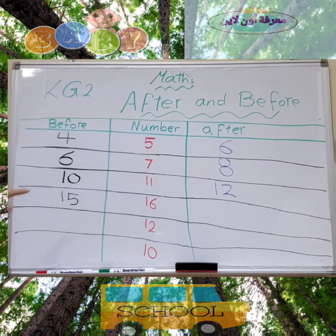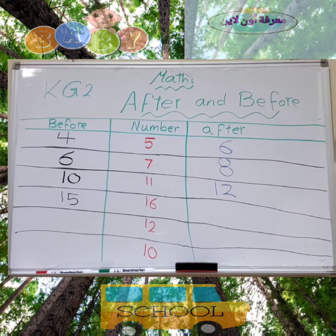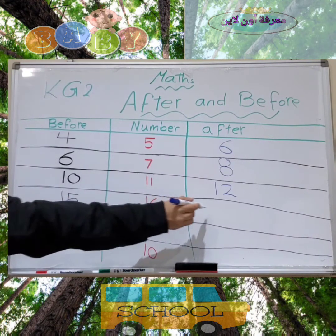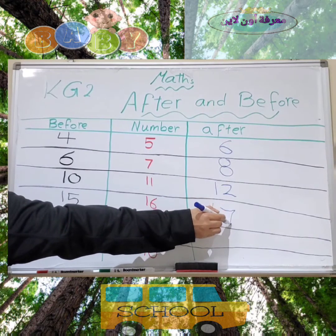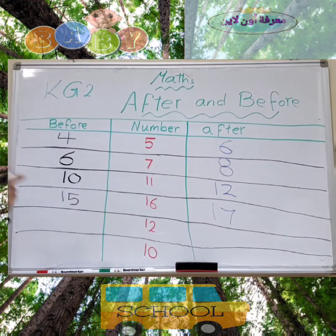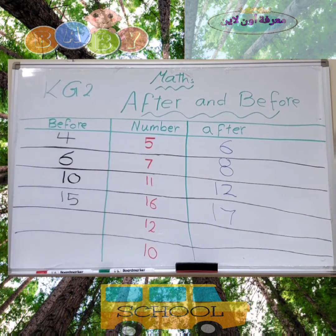What is the number after 15? Let's count: 1, 2, 3, 4, 5, 6, 7, 8, 9, 10, 11, 12, 13, 14, 15, 16, 17. The number after 15 is 16.